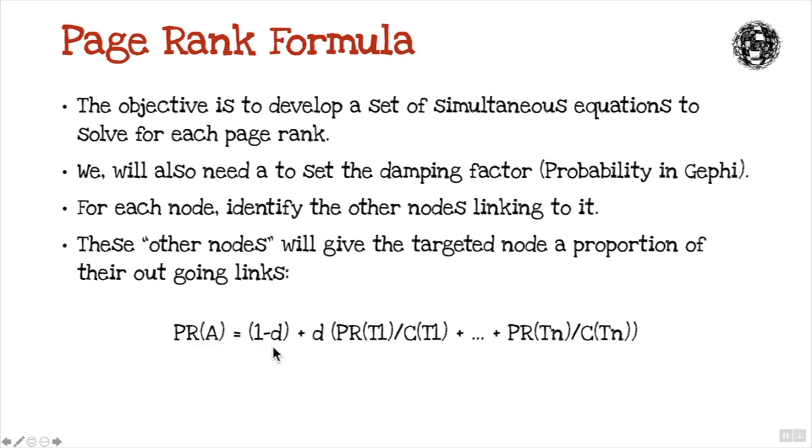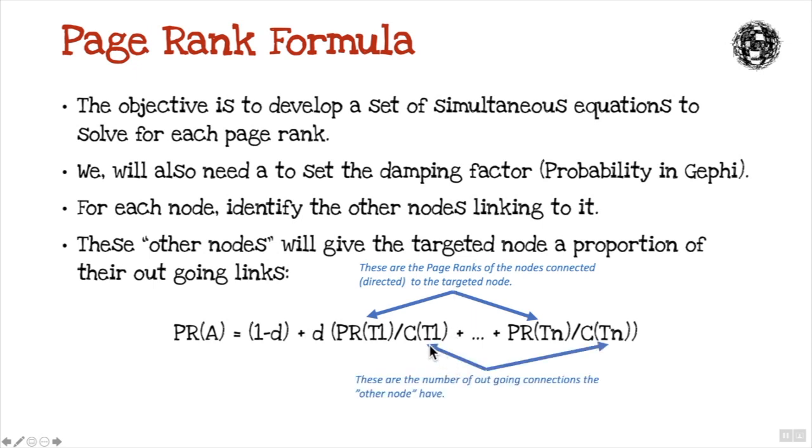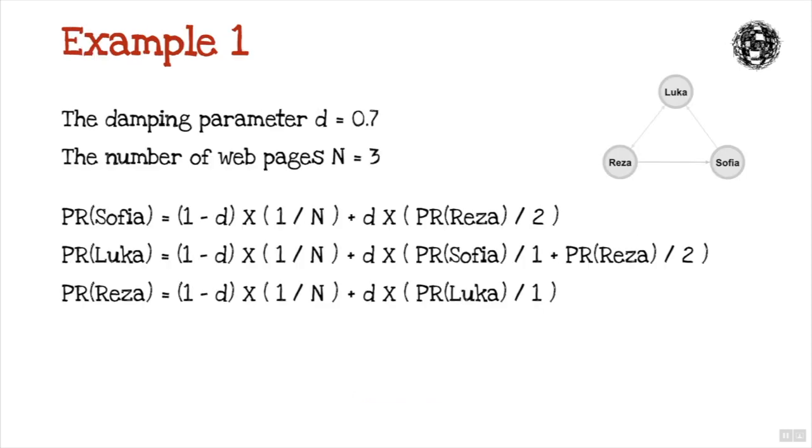So this is the formula in question. Page rank of A is 1 minus D, and D is the damping factor, plus D times the page rank of the other nodes. These are the page ranks of the others connected, directed to the targeted node. And these are the number of outgoing connections that the other nodes have.